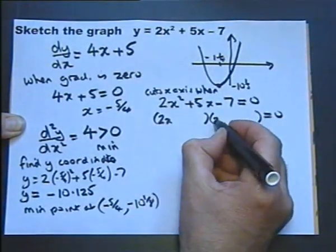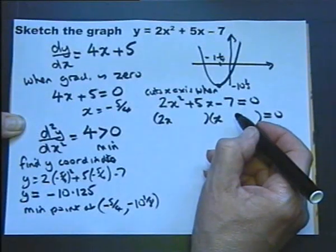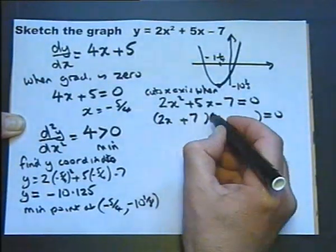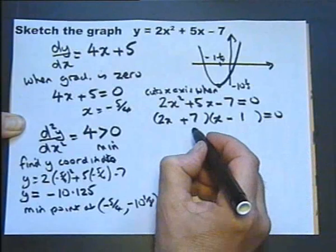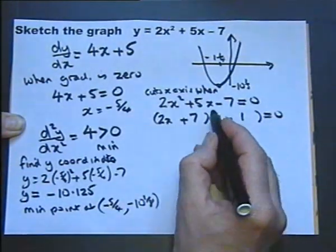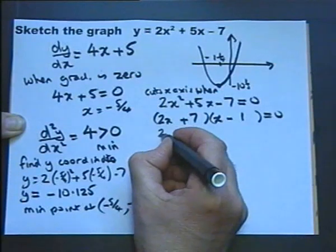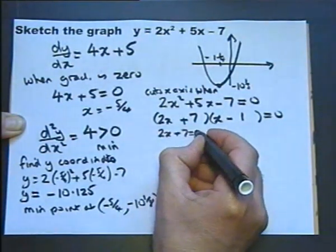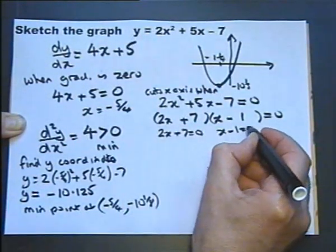So because that's a prime number, and so is that, I haven't got many choices. I think we'll find that it'll work round that way. Just check it. That's plus 7x, that's minus 2x, that'll work. So it gives me that this value can equal 0. This value can equal 0.